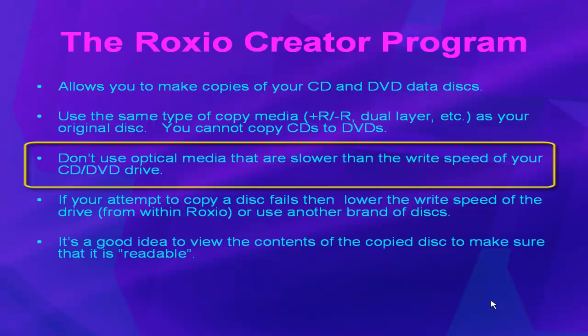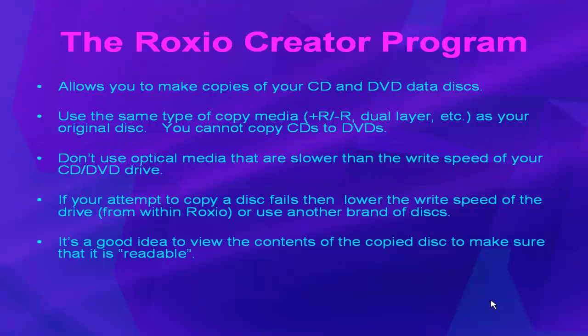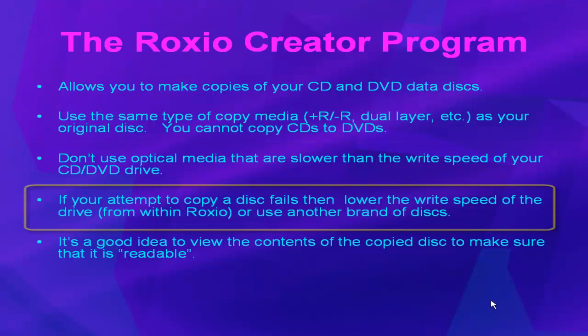This is very important because sometimes you will write a disc at 12x onto a CD that is rated at 12x and it won't work. You'll get a disc that you cannot read. If this happens, it is recommended that you go into the Roxio program and lower the speed that you write the data to the disc — let's say 8x — and then try burning the disc again. Frequently this will result in a successful burn.